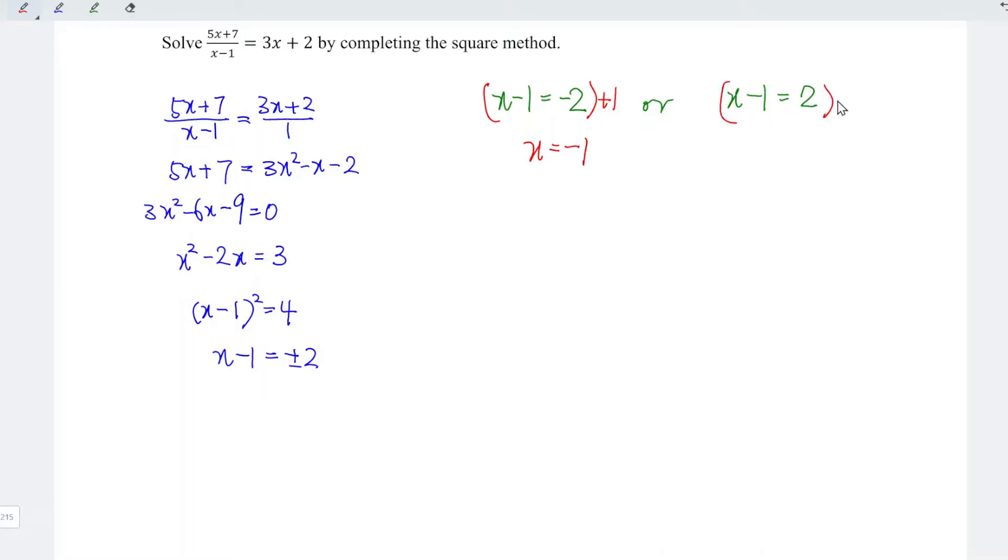And for the second equation, also plus 1 for both sides. Again, we have x on the left. And this is equal to 2 plus 1 is equal to 3. And we can now conclude that x is equal to minus 1 or 3 are the solutions that satisfy the equation.